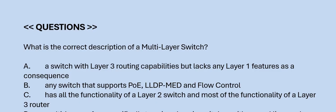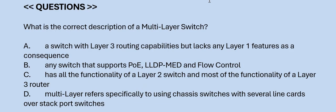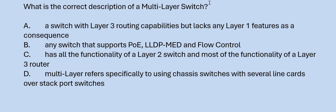Next question: What is the correct description of a multi-layer switch? Option A: a switch with layer 3 routing capabilities but lacks any layer 1 features as a consequence. Option B: any switch that supports PoE, LLDP MED, and flow control. Option C: has all the functionality of a layer 2 switch and most of the functionality of a layer 3 router. Option D: multi-layer refers specifically to using chassis switches with several line cards over stack port switch. The correct answer is Option C.